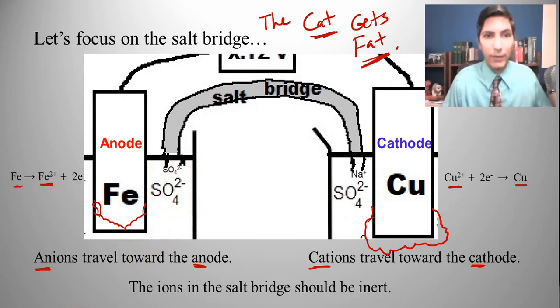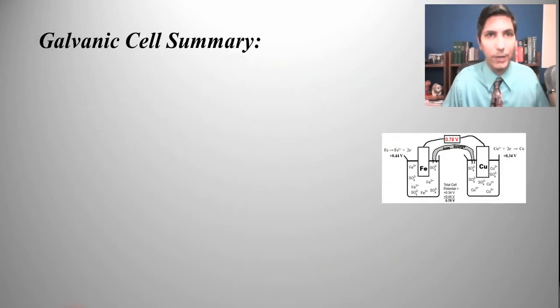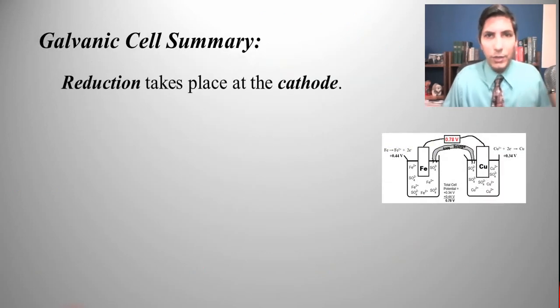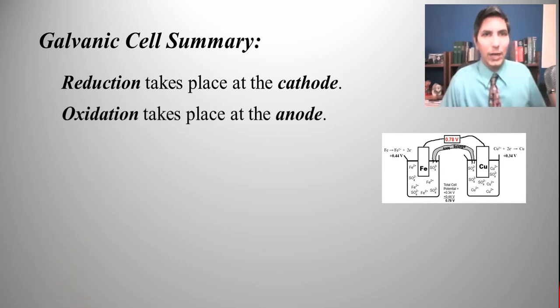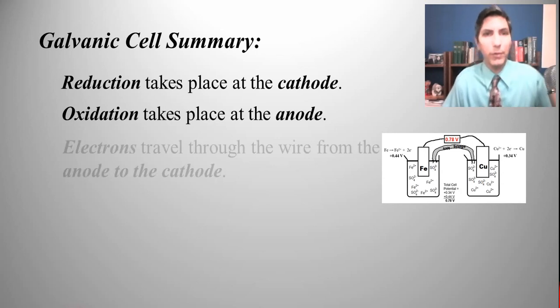Now, let's review what we've learned about galvanic cells. There's a lot going on here. Reduction takes place at the cathode. That's just how it is. Red cat and an ox. Well, oxidation takes place at the anode. And we talked about a couple ways to remember that.